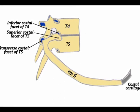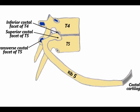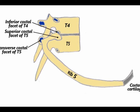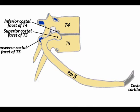For example, rib number 6 articulates with the upper part of the vertebral body of thoracic vertebrae T6 and the inferior aspect of T5 vertebral body.